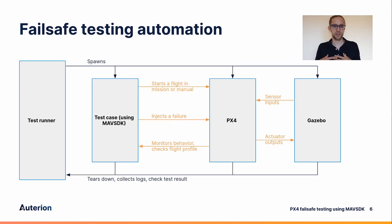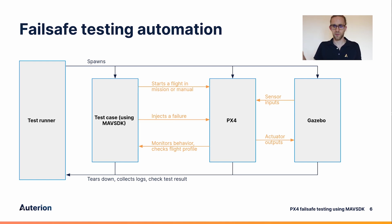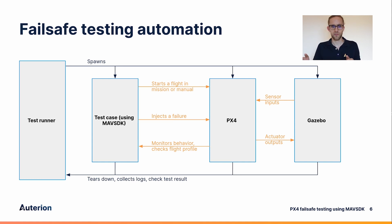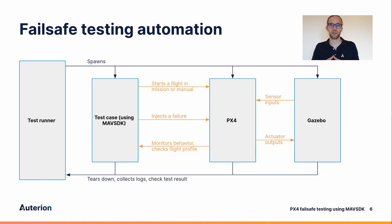Once we put this into testing automation — into CI — the way it works is that we have a test runner. The test runner spawns everything needed: for SITL, that's PX4 and Gazebo. Additionally, it runs an executable based on MAVSDK which contains a test case. The test case could be that it starts a flight, a mission, or a manual flight, and then at some point it injects a failure. After that, it monitors the behavior of PX4, checks the flight profile, checks that PX4 does the right thing and reacts accordingly. At the end of one test case, everything is torn down, logs are collected, and the actual result is checked.